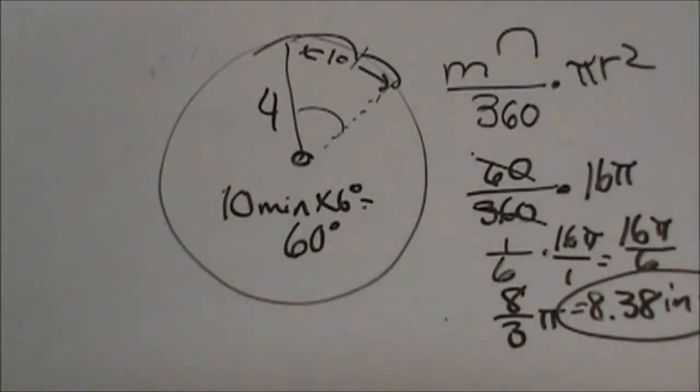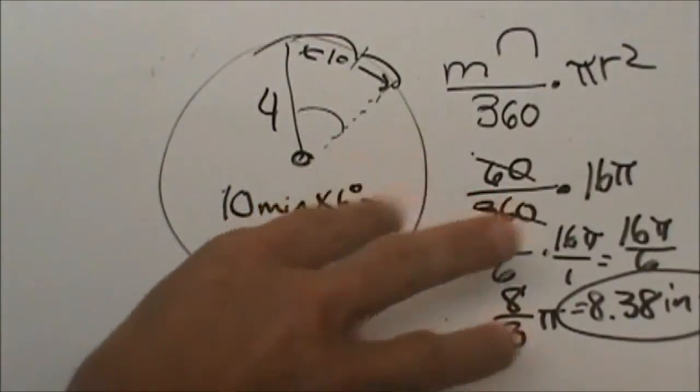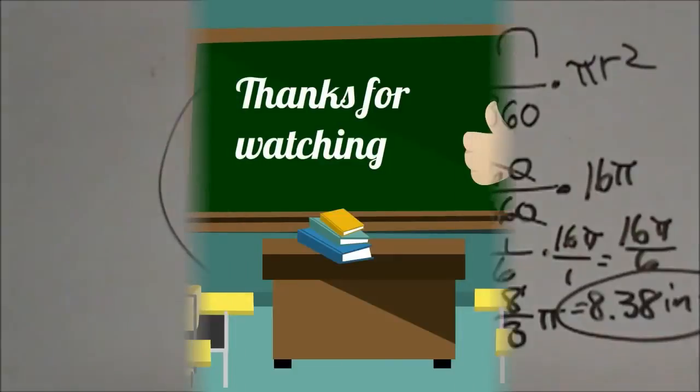There you go. So that is how you would figure that problem out. So you are looking using your formulas to decide what you need. Always draw a picture. That is the first strategy. Draw a picture. Label it. Write your formula and plug in what you know. Those are good practices.